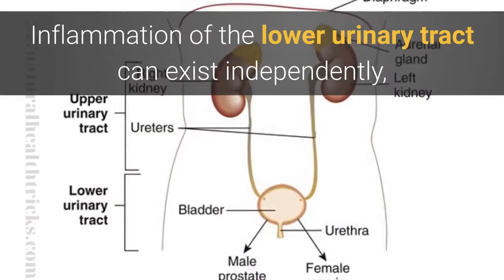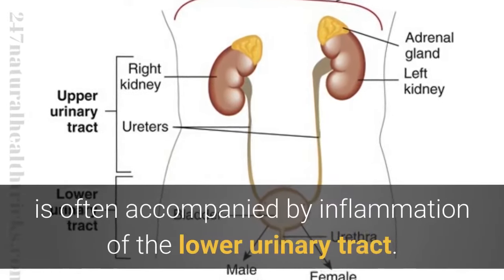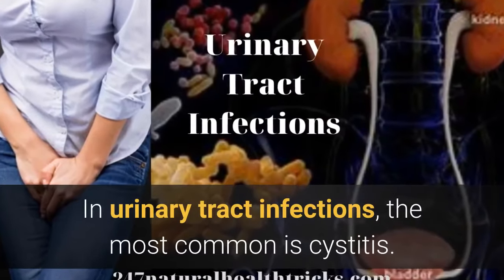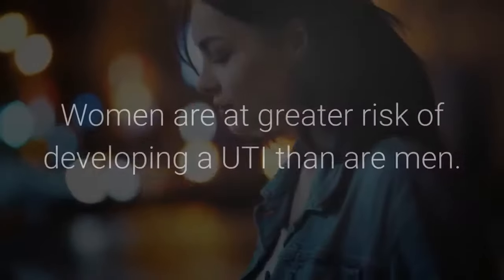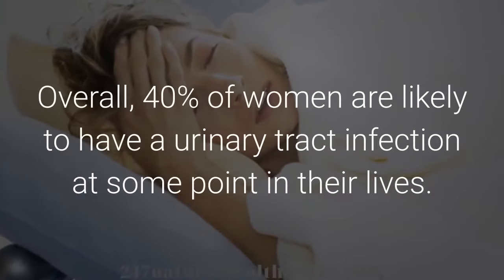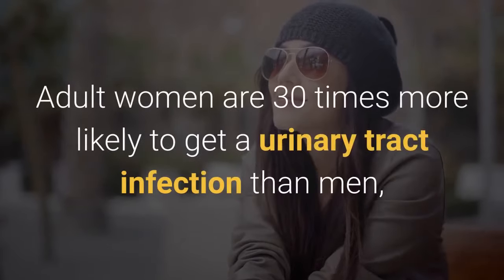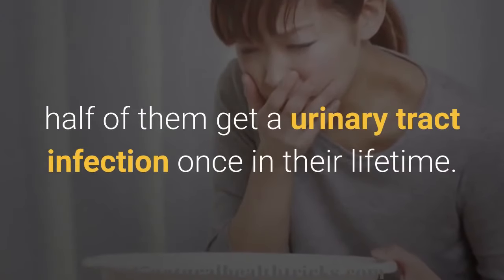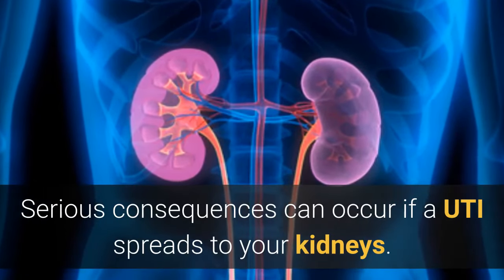Inflammation of the lower urinary tract can exist independently, while inflammation of the upper urinary tract is often accompanied by inflammation of the lower urinary tract. In urinary tract infections, the most common is cystitis. Infection limited to your bladder can be painful and annoying. Serious consequences can occur if a UTI spreads to your kidneys.